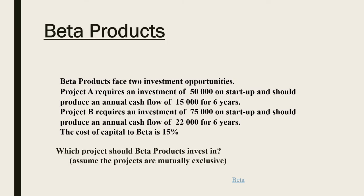Here's a problem for you. Beta products have got two investment opportunities. Project A requires an upfront investment of 50,000 and then produces annual cash flows of 15,000 for six years. Project B requires an investment of 75,000 and produces annual cash flows of 22,000 for six years as well. If the cost of capital, that's the discount rate, is 15%, which project should they invest in?